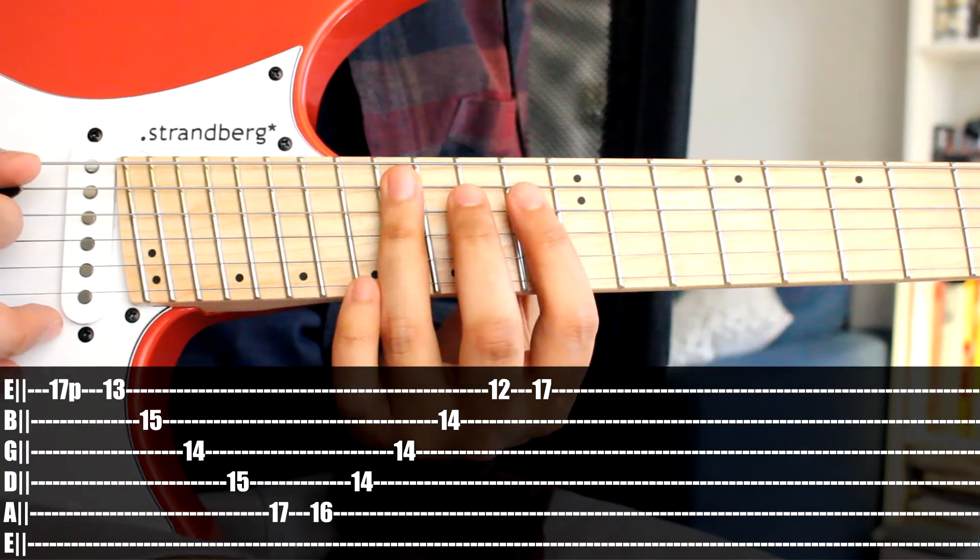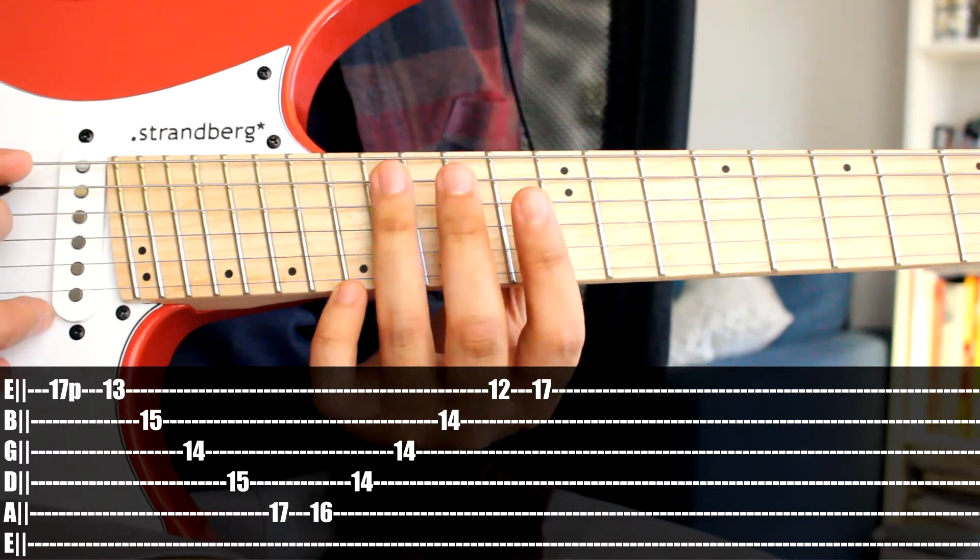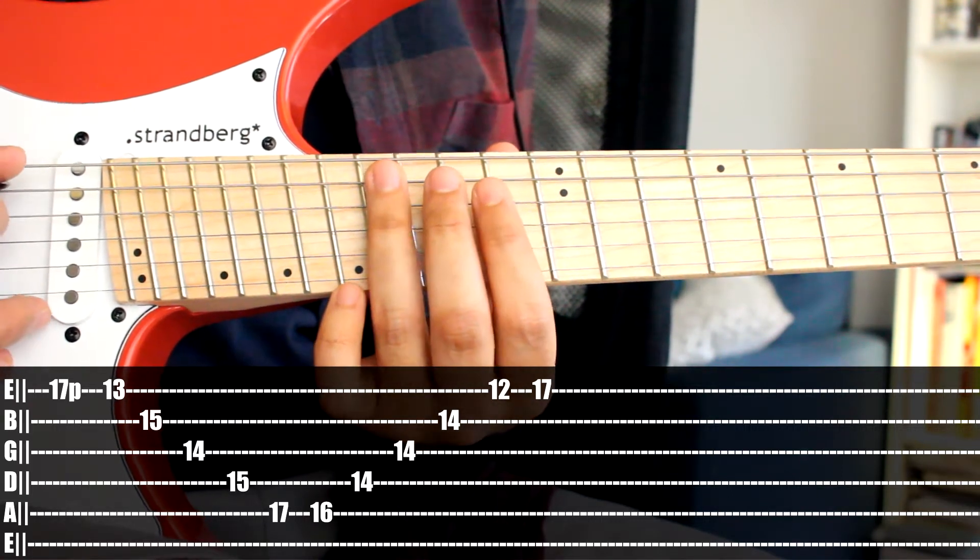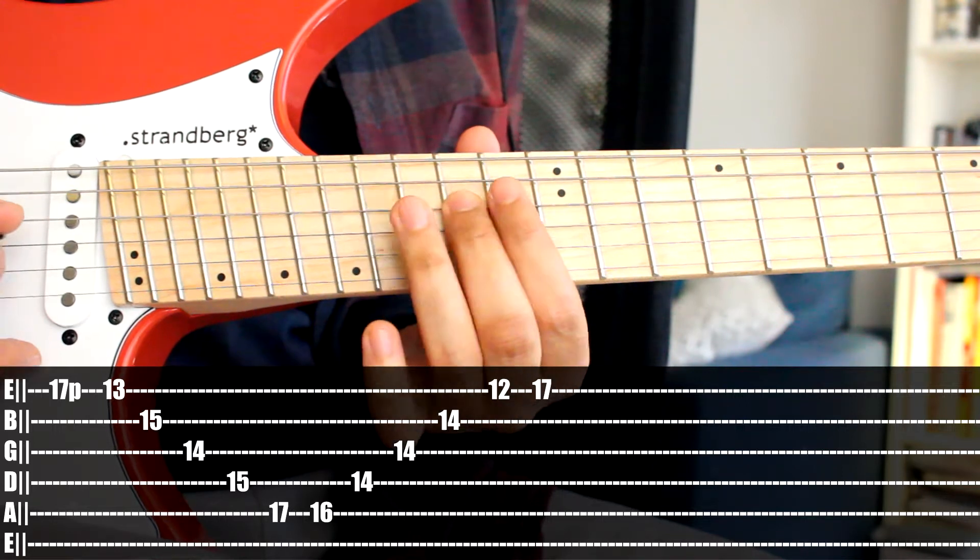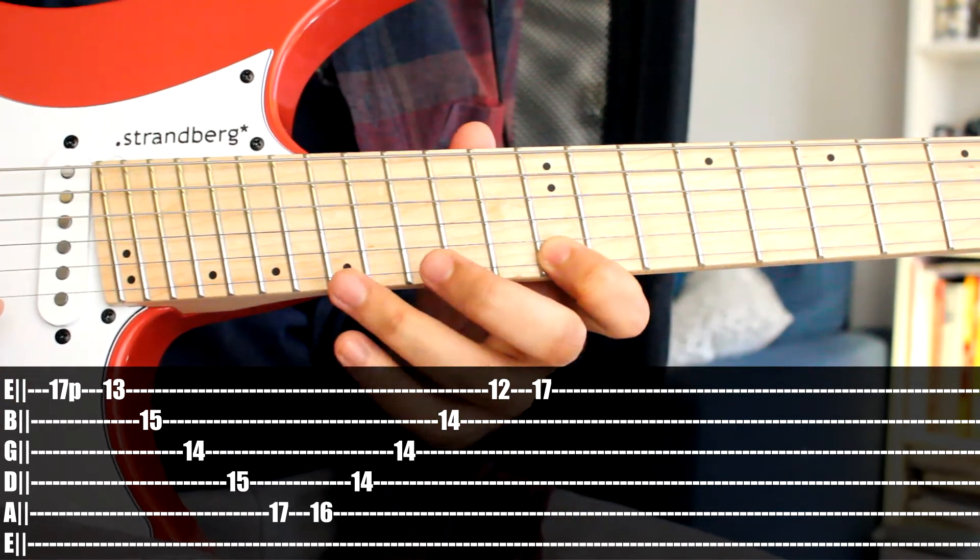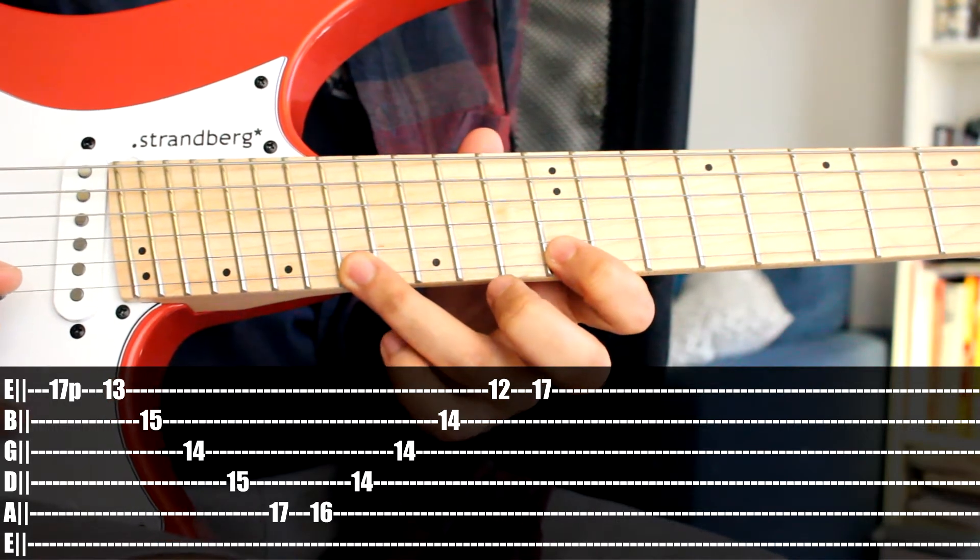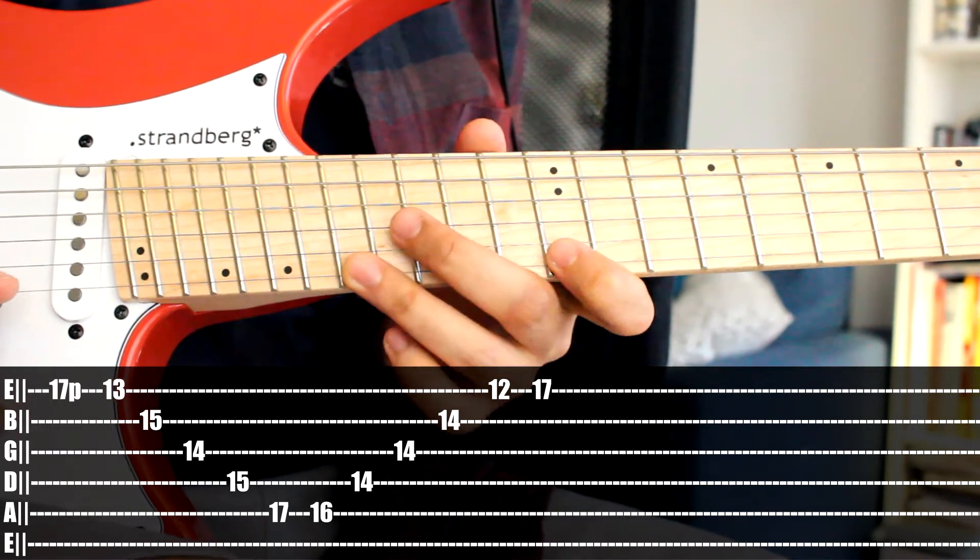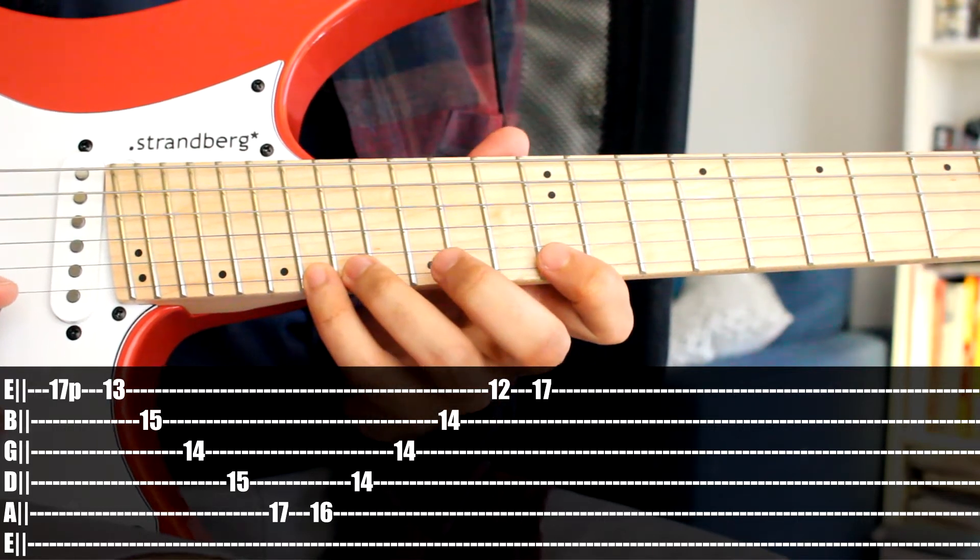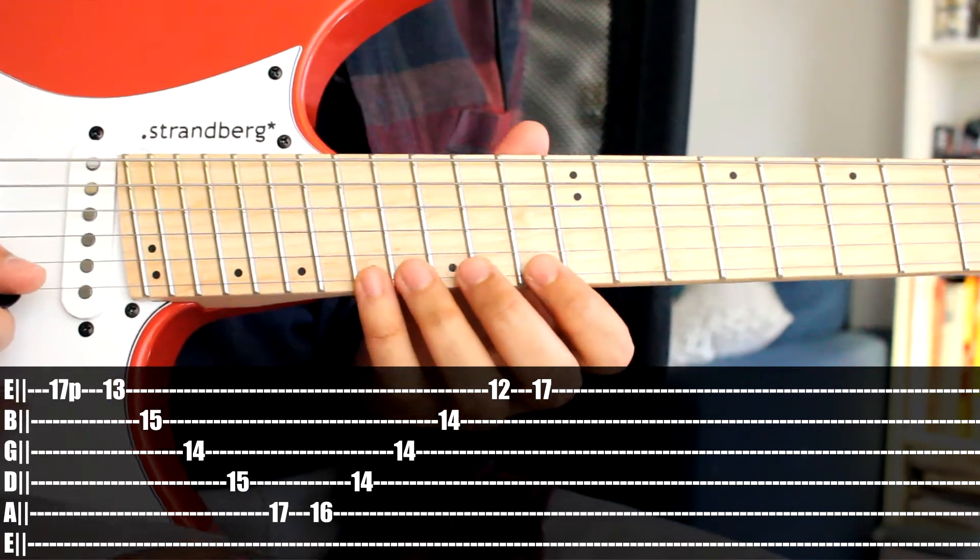We're going to bar the 14th notes with our middle finger, we're going to sweep downwards: D, G, and B, 14, 12 on the high E, 17 very important with your ring finger. It's very important to end with your ring finger in order to start the next sequence with your pinky. Let's see what that looks like again.